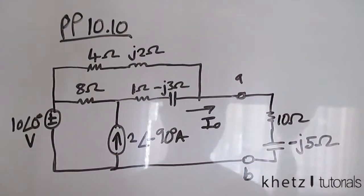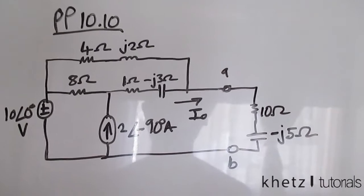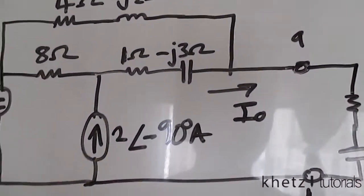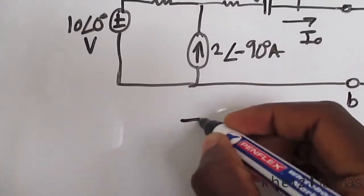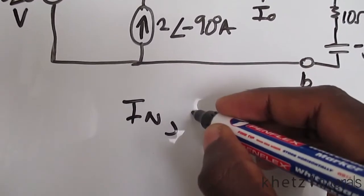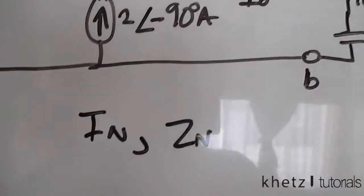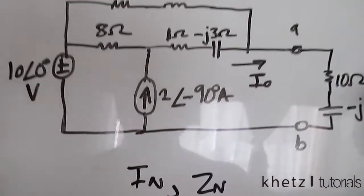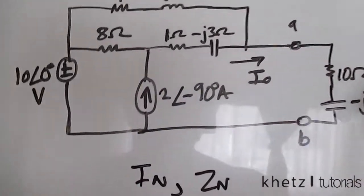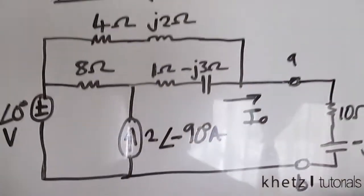Welcome to CAST tutorials. In this video I'll be covering practice problem 10.10. We are asked to find the Norton equivalent of this circuit, which comprises the Norton equivalent current as well as the Norton equivalent impedance. If you haven't subscribed to my channel please subscribe, and if you like this video give it a thumbs up. Let's start by finding the Norton equivalent current.